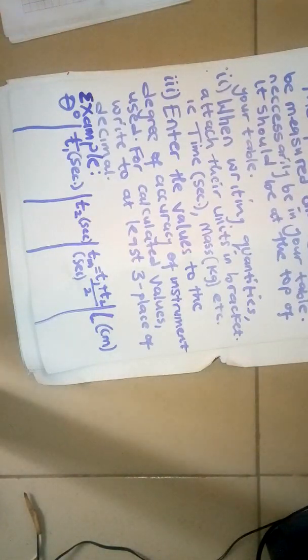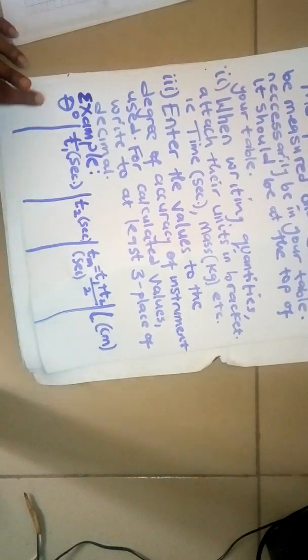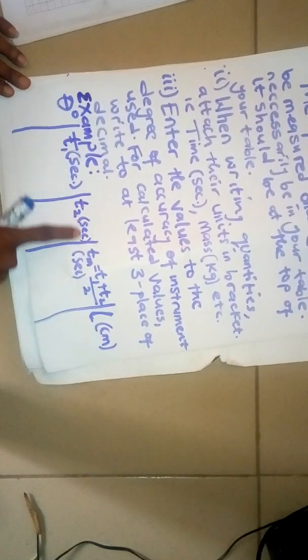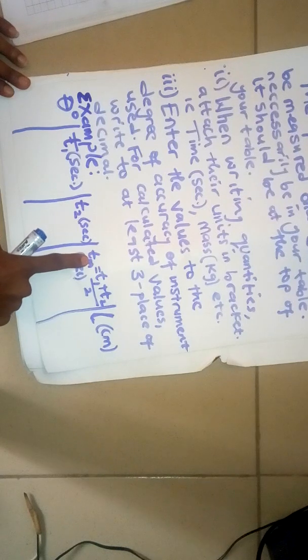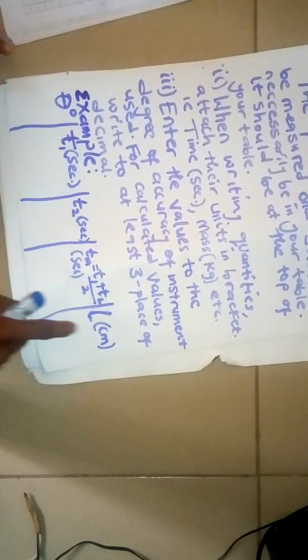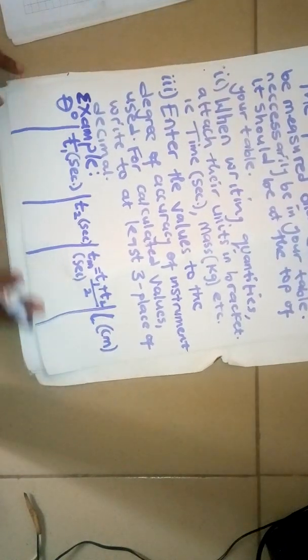Hello guys, so we would continue with this section in the same series. I'll be looking at an example. If we have a table like this, we are to measure theta, measure time t1, measure t2, then the mean time which is the average, and length. Of course there cannot be an experiment that has all these parameters, but I want to use that as an example.